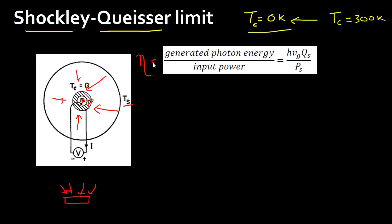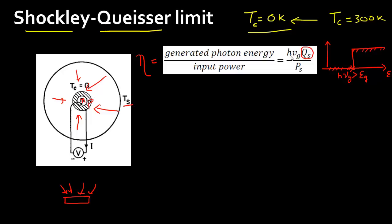The efficiency in this case equals the total generated photon energy divided by the input power. The number of photons absorbed, denoted Qs, is calculated assuming the step-function absorption: all photons with frequency corresponding to energy greater than the bandgap are completely absorbed, and those below the bandgap are not. Absorbed photons are collected at energy equal to the bandgap, and this is divided by the total input power in the spectrum.